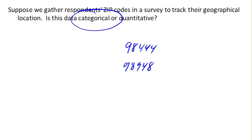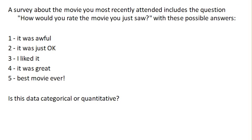What about a survey about a movie that includes the question: how would you rate the movie that you just saw? And it gives options 1, 2, 3, 4, and 5, associated with some descriptions. Now, even though these are again numerical, and even though we could try adding them, I would argue that this data is in fact categorical.